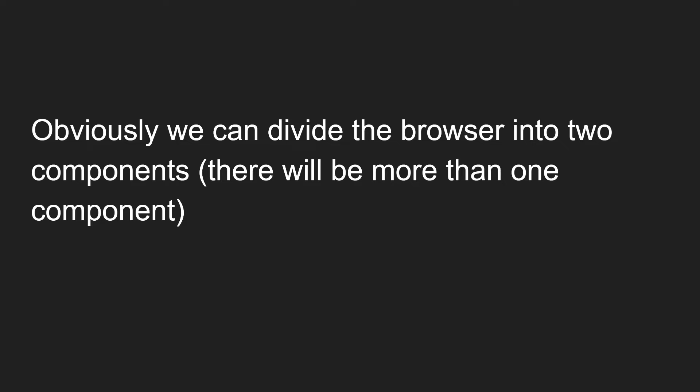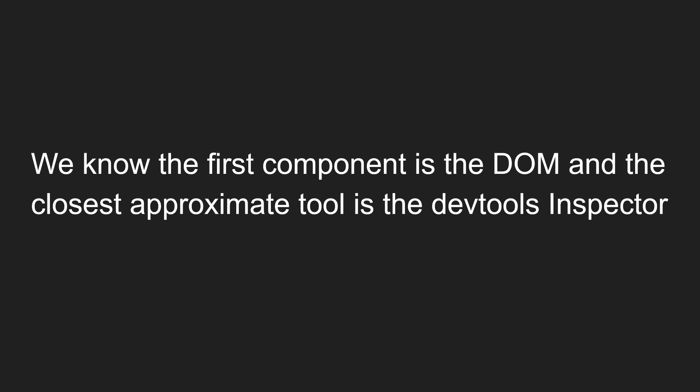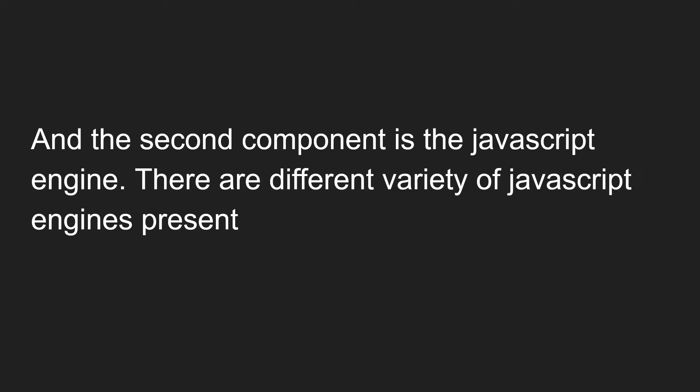Now we can divide the browser into two components. Obviously there are more than two, but based on what we have learned: the first component is the DOM, and the closest tool for it is the DevTools inspector. The second component is the JavaScript engine. There are different varieties of JavaScript engines present in the market.